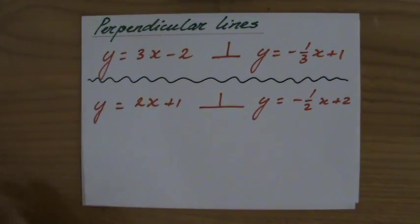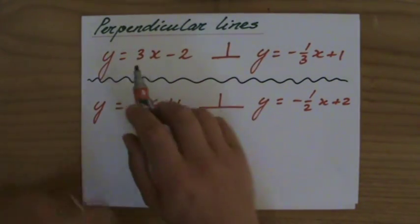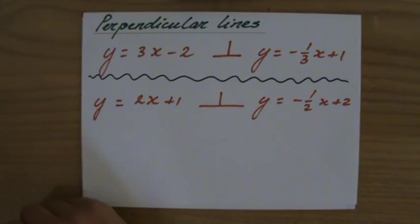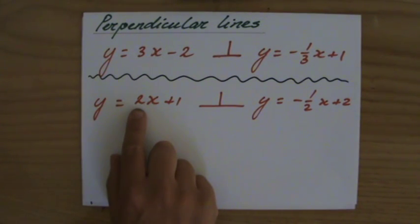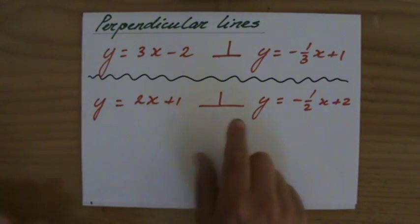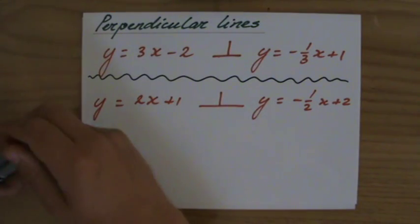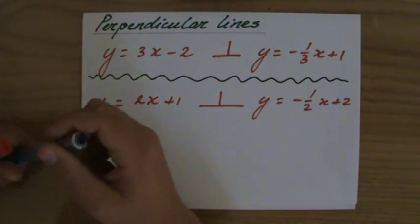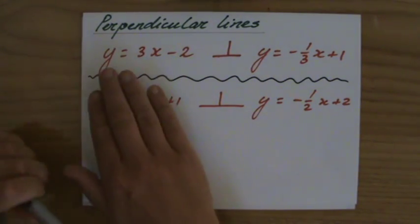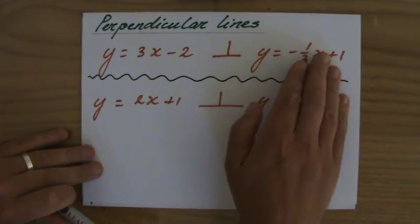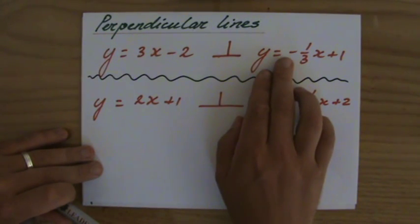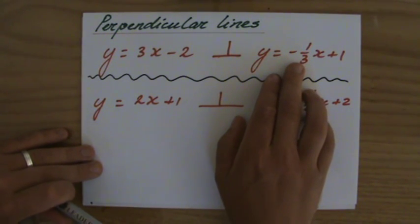So we're going to have a look at the gradient. And here it is 3 and there it is minus 1 over 3. And here it is 2 and that's perpendicular to a line with a gradient of minus 1 over 2. Now perhaps you already see a relationship that is that lines are perpendicular and then one gradient is the negative reciprocal of the other one.